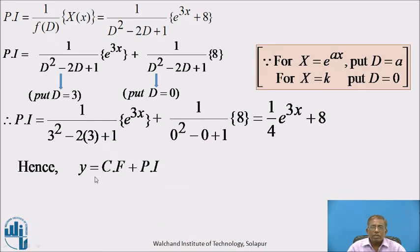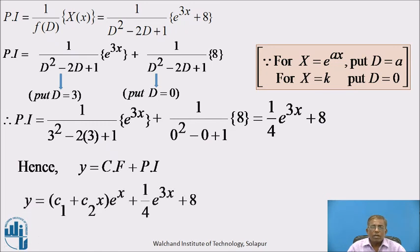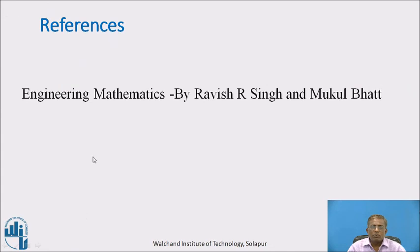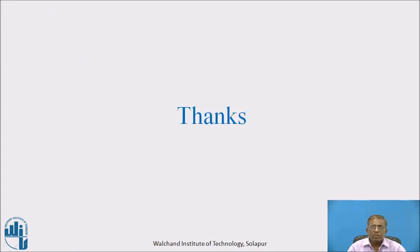Hence, the general solution is y = CF + PI. Therefore y = (c₁ + c₂x)e^x + (1/4)e^(3x) + 8. This is the required general solution for the given equation. To prepare this video session, I referred to this book as a reference. Thank you.